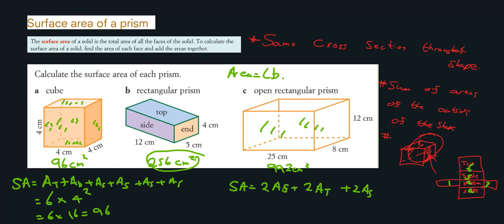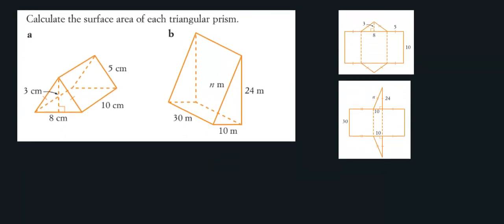A solution has three parts: the formula, the calculation, and the answer. I deliberately missed something out on this solution — it is not a full solution. Can you work out what I've missed? The missing element is the units.